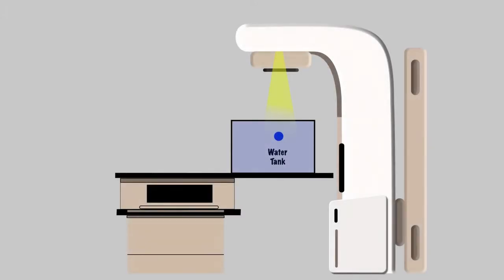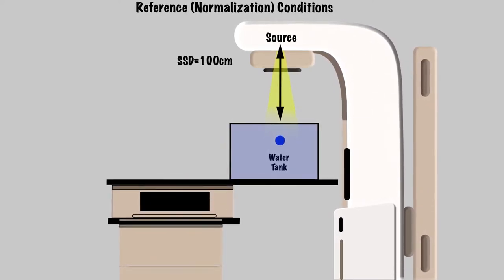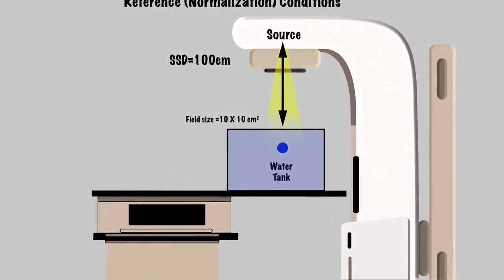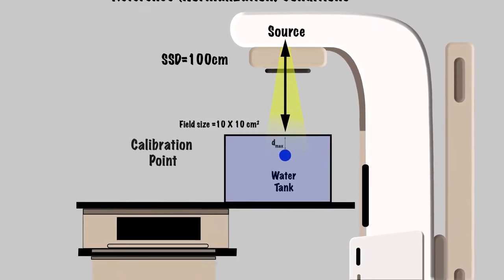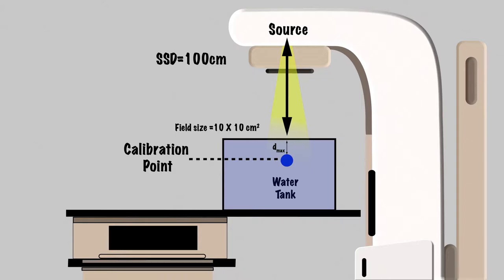In the last video, we talked about the factors affecting dose calculations and the reference or normalization conditions typically used to calibrate a LINAC. These include an SSD of 100 centimeters, a field size of 10 by 10 centimeters, and the calibration point at D max. The machine is calibrated to deliver one centigrade per monitor unit to the reference calibration point for each individual beam energy.